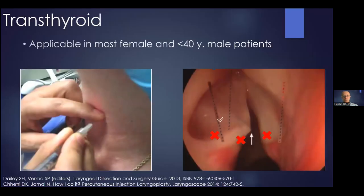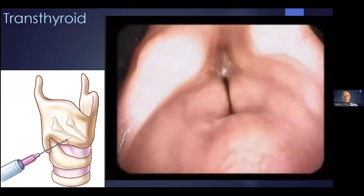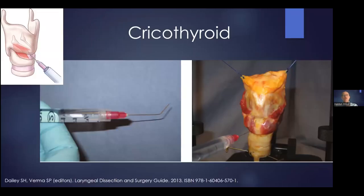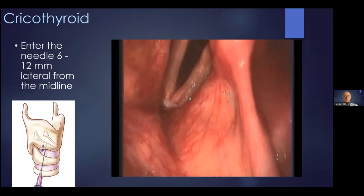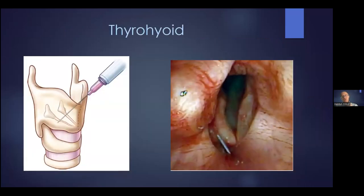The third route is the percutaneous route, with three options. The first is transthyroid — going through the thyroid cartilage — which is the least used because you need to pass through cartilage, making it difficult clinically. The second is the cricothyroid space, which is actually the easiest because you have the least amount of injectable loss and can reach the target points more easily. The third is the tyrohyoid approach, going through the tyrohyoid membrane with an angle from above to below to reach the vocal folds.